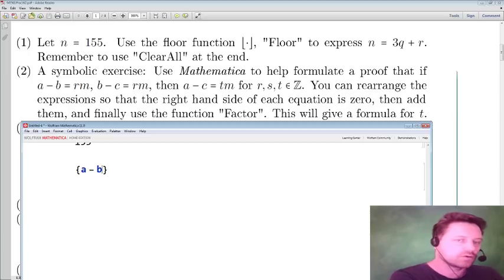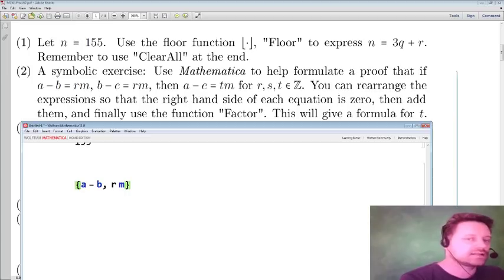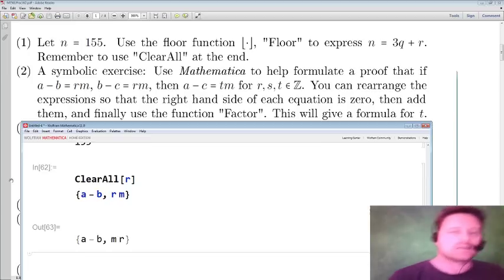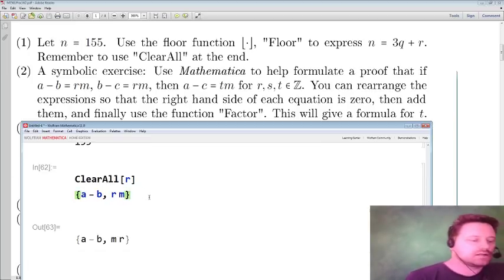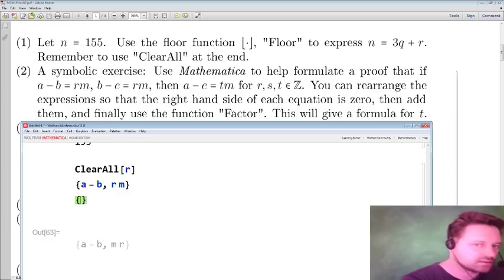First of all I've got a minus b, and I'm considering in my mind I'm thinking about a minus b is equal to rm, but I'm just going to enter a comma there and then I'm going to put r by m. But I can see that the letter r is in black and so that tells me that it's in memory, so I need to clear that: ClearAll r. Okay, let's see. Yes, now that's good.